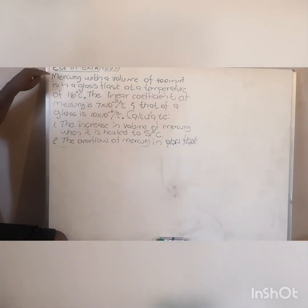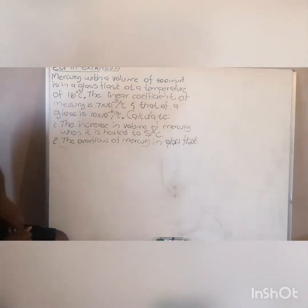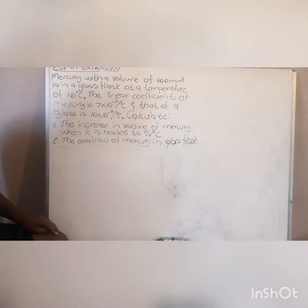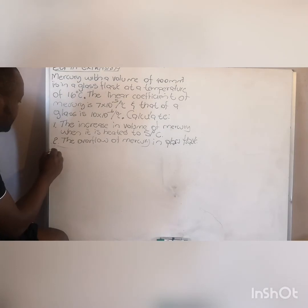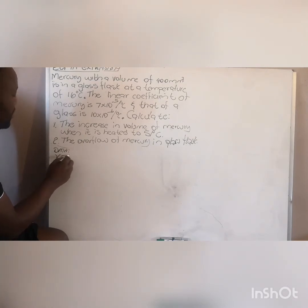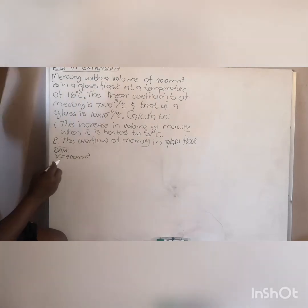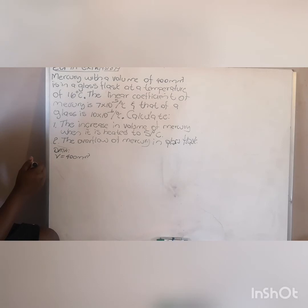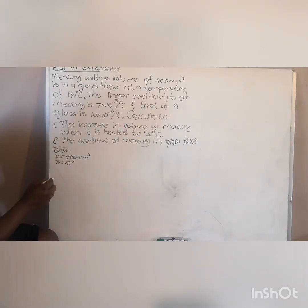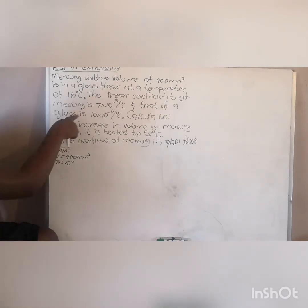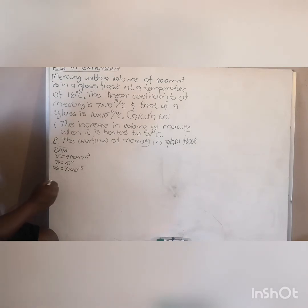You have mercury with a volume of 400 millimetre cubed in a cast. Let us write out the data: volume is 400 millimetre cubed, and the temperature is 16 degrees Celsius.